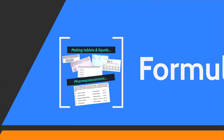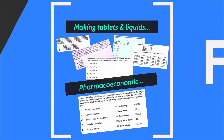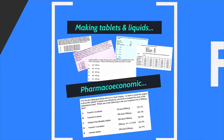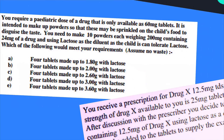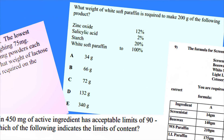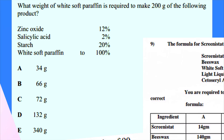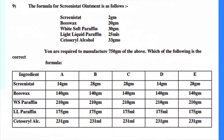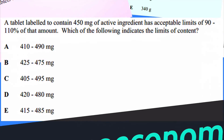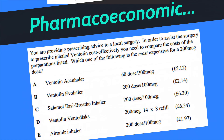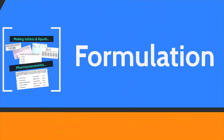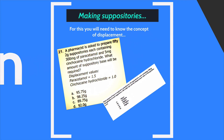The next stage is formulations, which can be either extemporaneously prepared tablets or liquids. A lot of the questions involve manufacturing a batch and then splitting it up, or fulfilling a certain recipe with different components. You also have, quite rarely, pharmacoeconomic questions. Making suppositories — you will need to know the concept of displacement. Here's a quick question talking about displacement values.